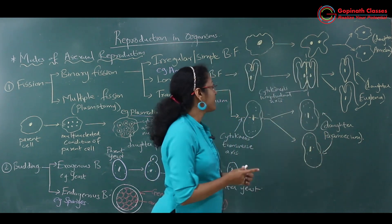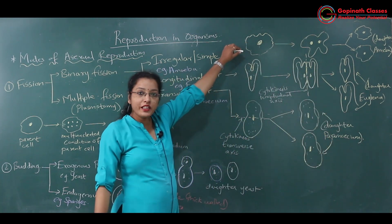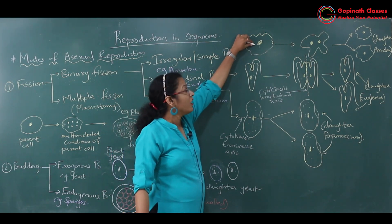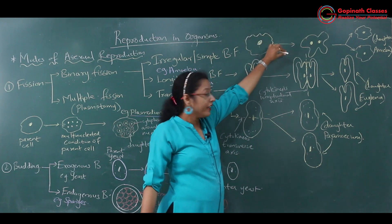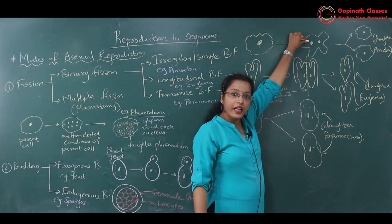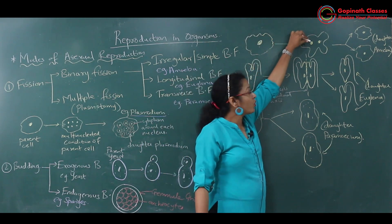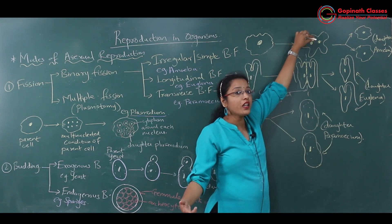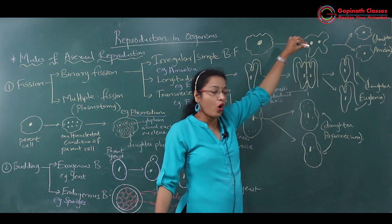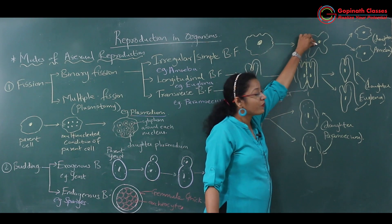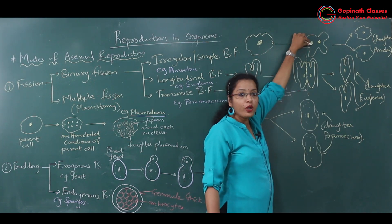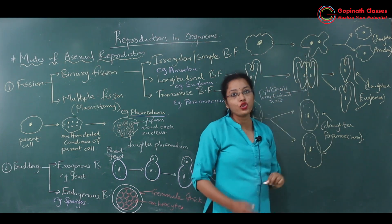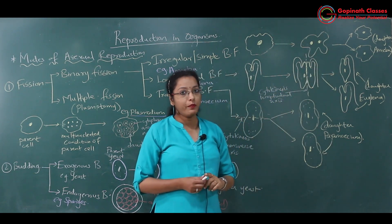What exactly happens? Here I have drawn the diagram wherein this is the parent amoeba, wherein the nucleus will divide irregularly followed by cytoplasm. Irregular nuclear division means karyokinesis — the other name for nucleus is karyon. So karyokinesis will occur irregularly followed by cytokinesis, and likewise there will be formation of two daughter amoeba.